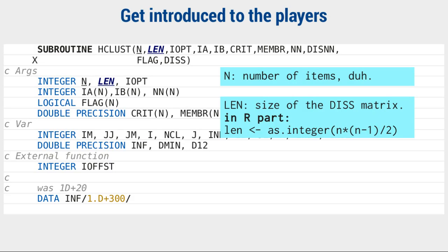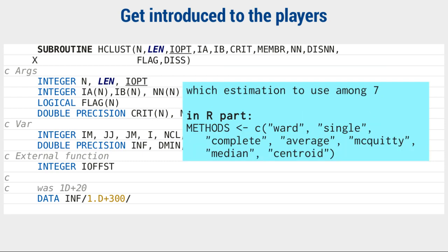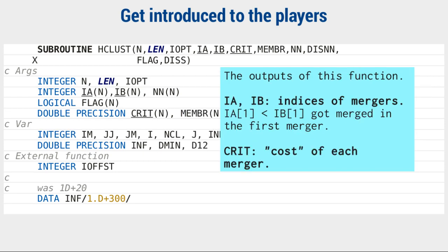I'll start with the roles of each variable, excluding those small variables which are reused for different roles in different parts of the program. n is the number of items. len is the size of the dissimilarity matrix, which didn't really have to be a parameter. iopt from 1 to 7, the choice of method. Ia, Ib, and crit are the outputs of this program.